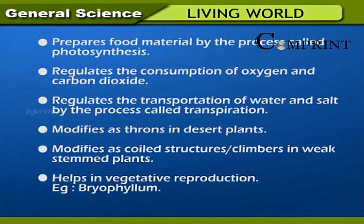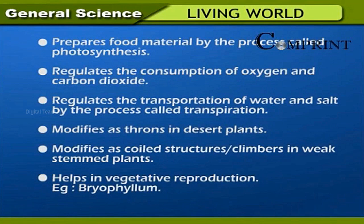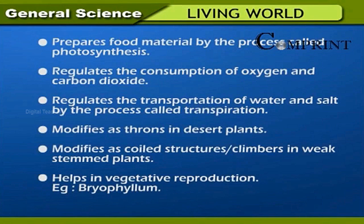Functions of leaf: Prepares food material by the process called photosynthesis. Regulates the consumption of oxygen and carbon dioxide. Regulates the transportation of water and salts by the process called transpiration. Modifies as thorns in desert plants. Modifies as coiled structures in climbers and weak stem plants. Helps in vegetative reproduction — example: Bryophyllum.